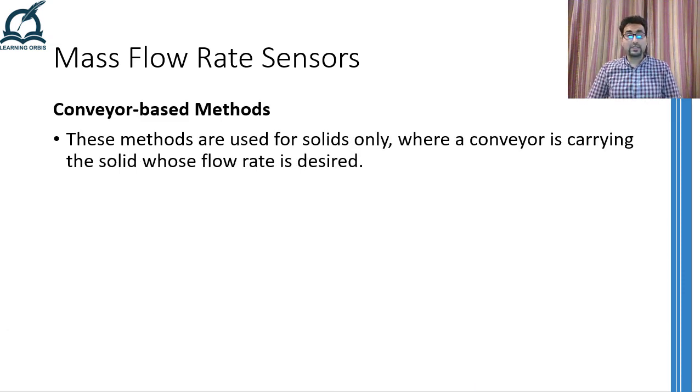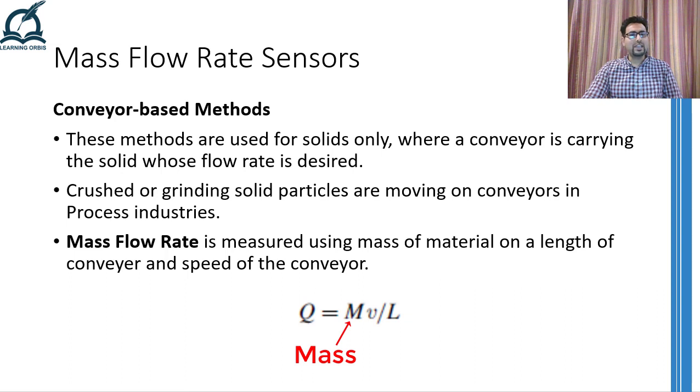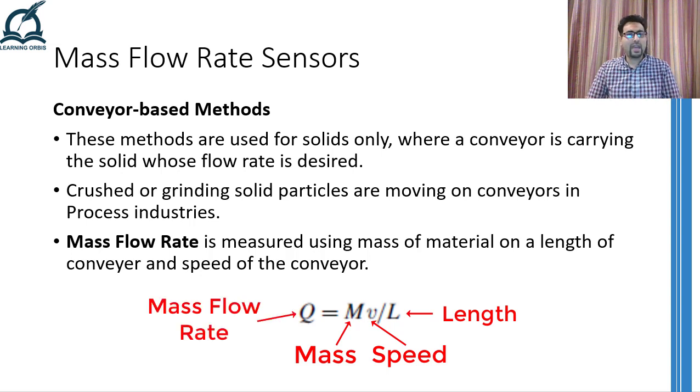The very first method is in fact a combination of methods in which solid particles are traveling on an open conveyor. Therefore, these methods are combined under the heading of conveyor-based methods. The working principle of these methods is very straightforward. That is, we measure the weight of the section of a conveyor on which some grinded or crushed solid particles are traveling. Convert that weight into mass and multiply it with the speed of the conveyor. And lastly, divide it by the length of this section which we were considering will give us the mass flow rate.